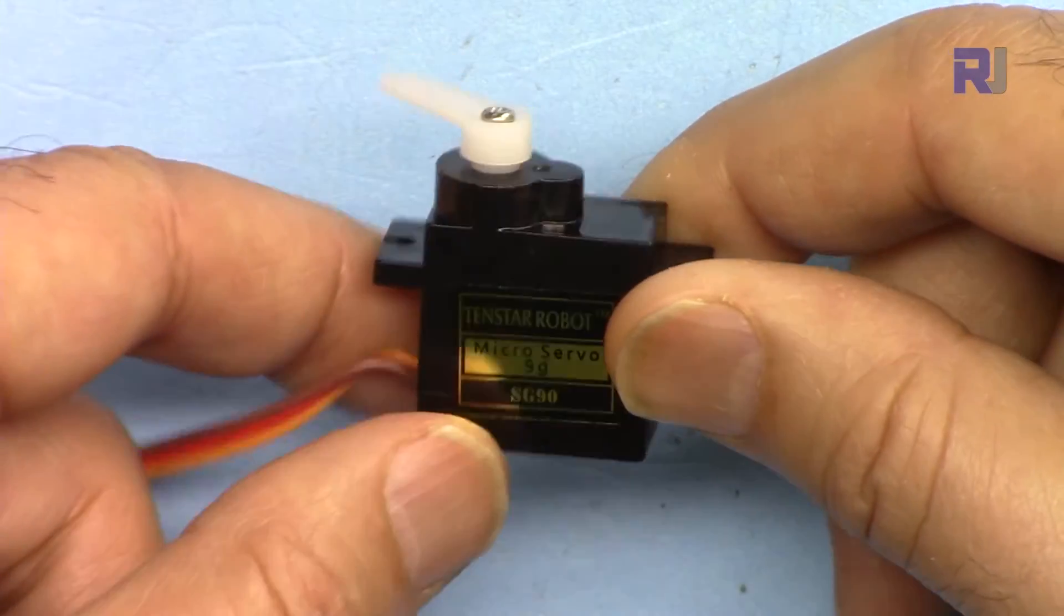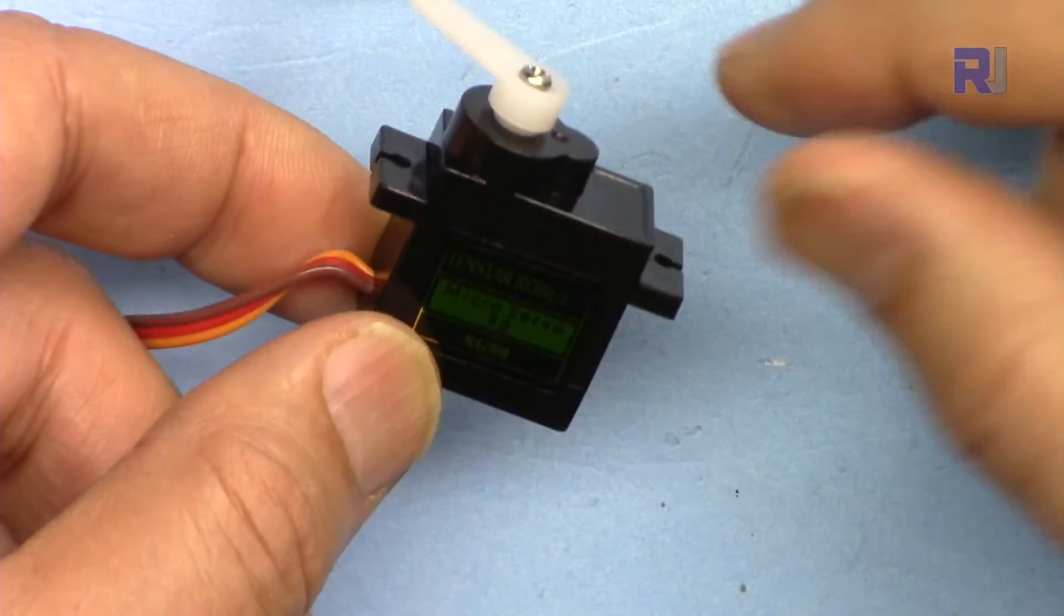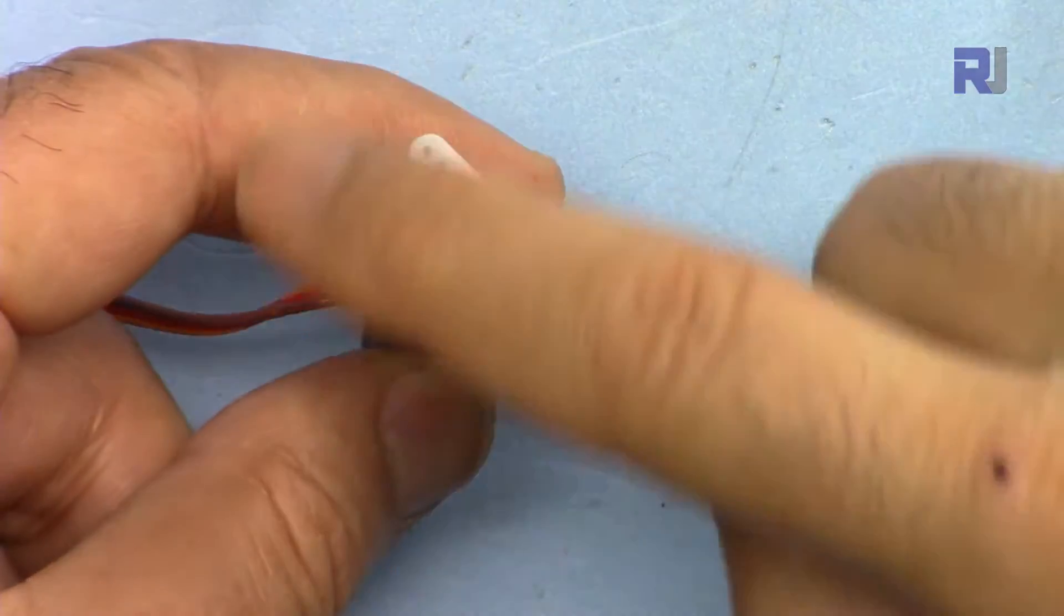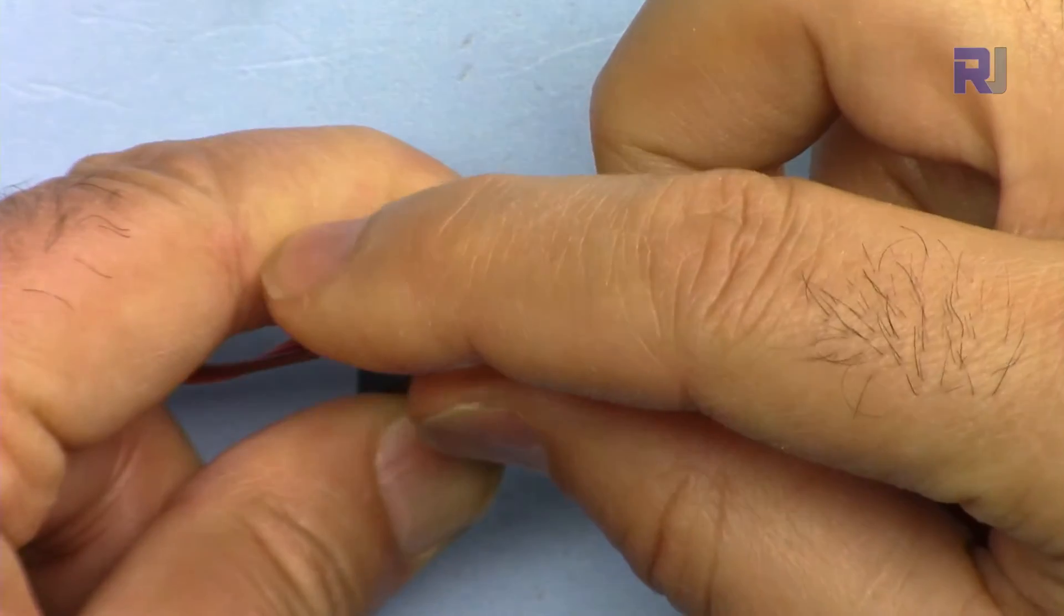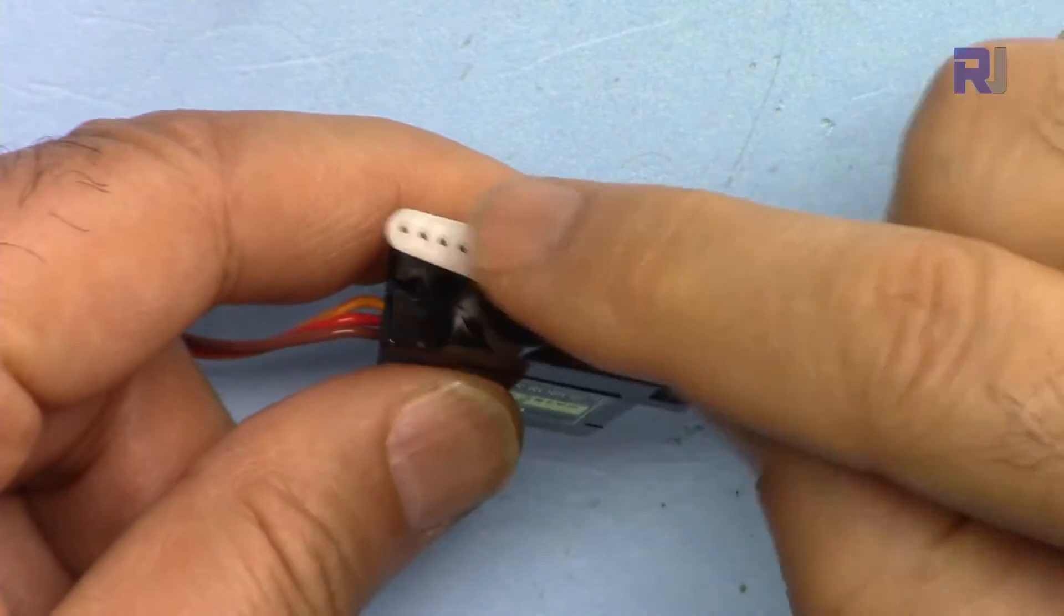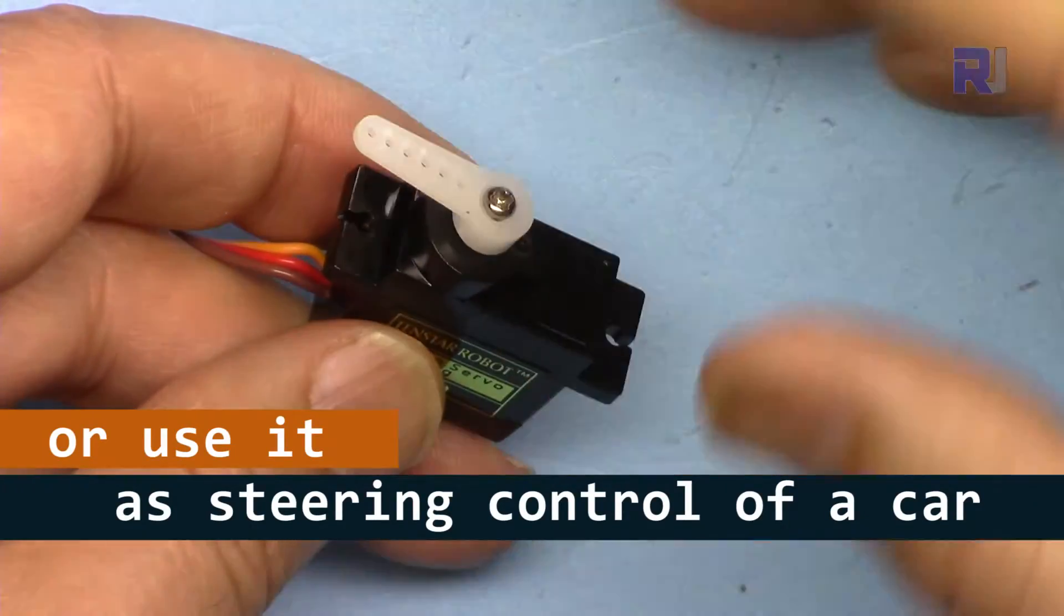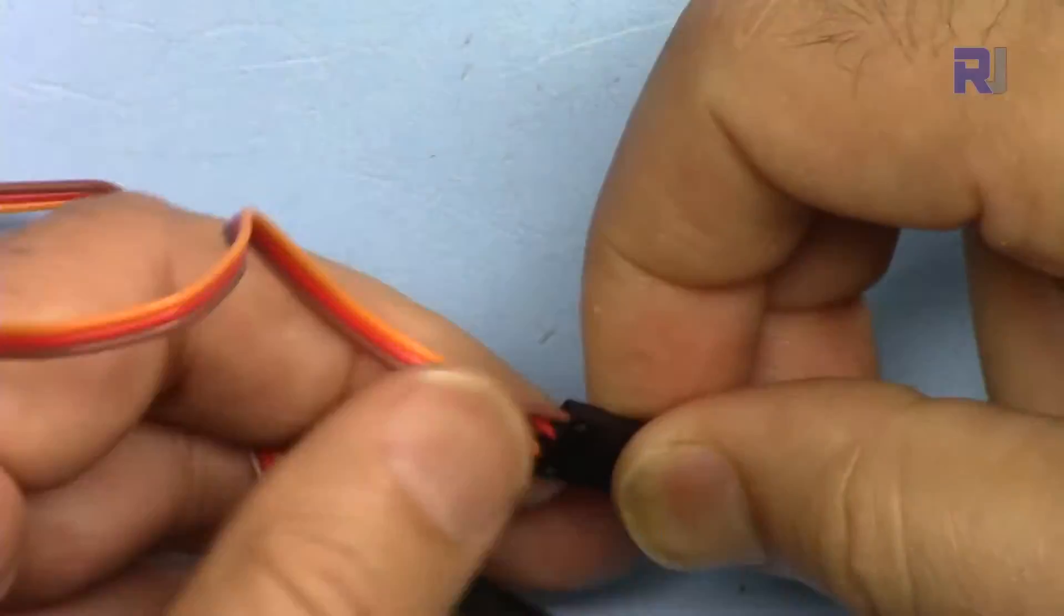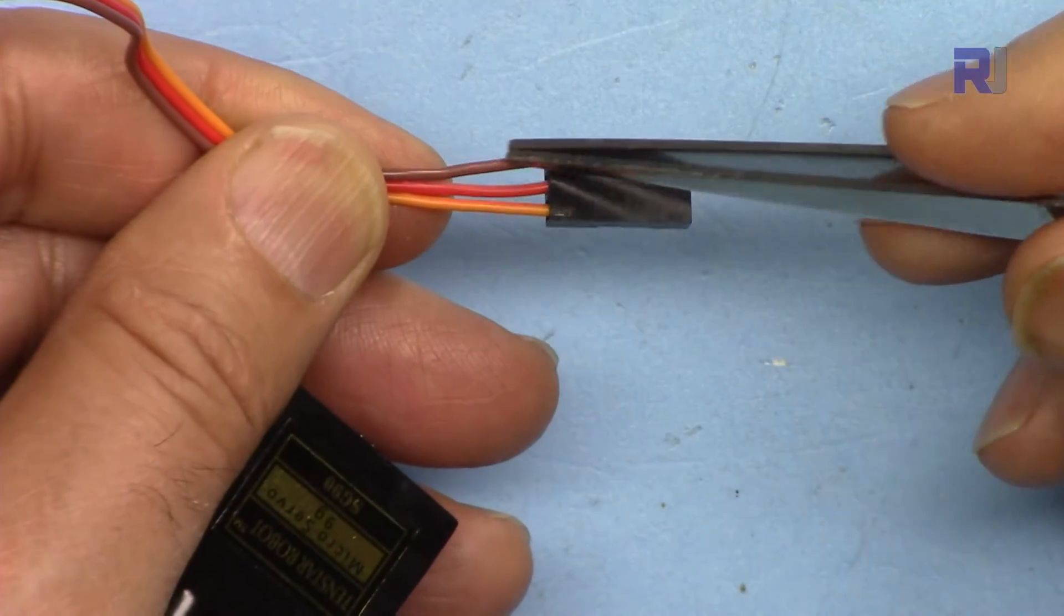To quickly explain the servo motor, a servo motor is a type of motor that does not do 360 rotation. In this case this can go up to 180 degrees and it is sold with different kinds of attachments that you can control airplane wings and many other applications that you want to move something.